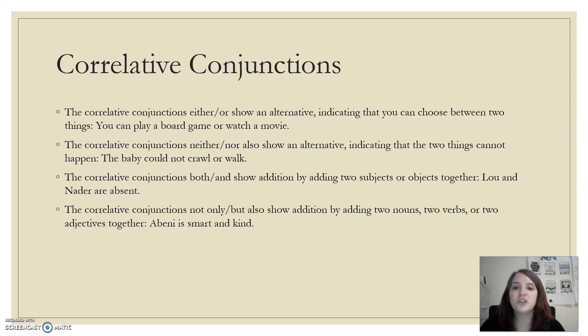So correlative conjunction either and or show an alternative, meaning you can choose between these things. Either or. Neither is the same thing. It's also an alternative, but it's things that cannot happen. Both and are adding things together, adding two subjects, and the same thing goes for not only and but.